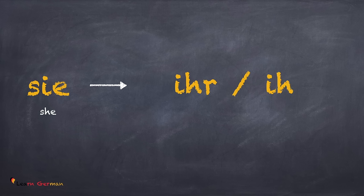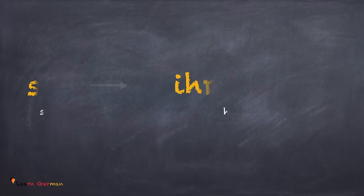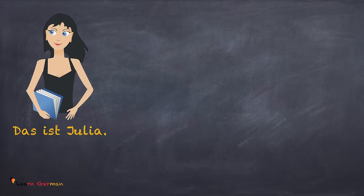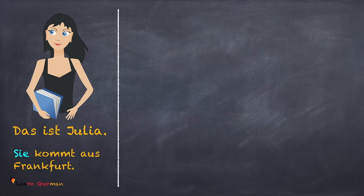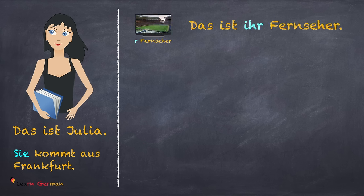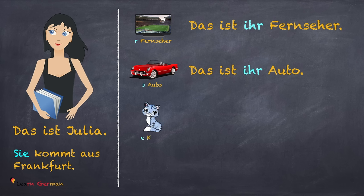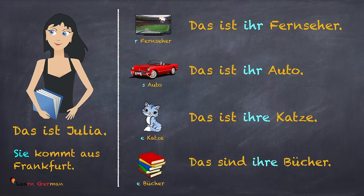Now let's come to the singular pronoun for feminine: 'sie.' The possessive pronouns in Nominativ are 'ihr' or 'ihre.' You use 'ihr' when the article is 'der' or 'das,' and 'ihre' when the article is 'die' for feminine or in plural.